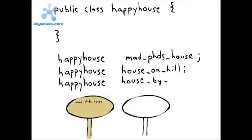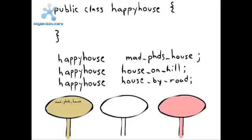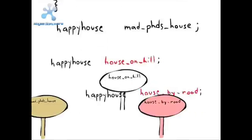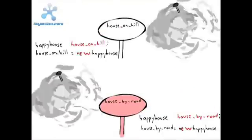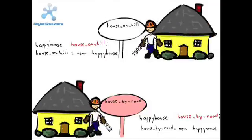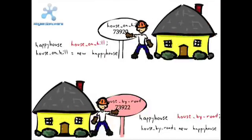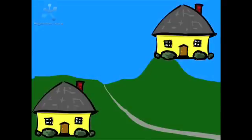For example, assume we want to build two more houses. We will declare reference variables HouseOnHill and HouseByRoad to hold their addresses. Then, when an object is created using new, its address will be assigned to the appropriate reference variable. This technique provides a distinct way to refer to each instance of an object through the reference variable that holds its address.